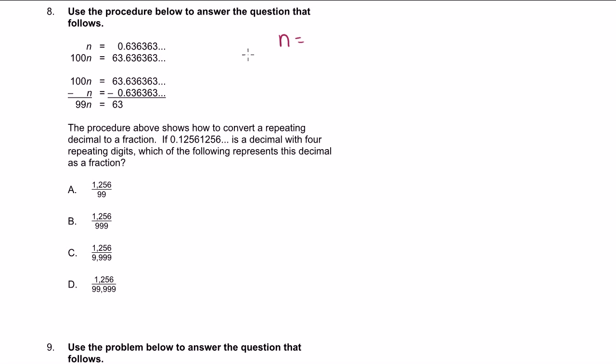You say n is equal to 0.12561256. And then we could multiply that. And you could even pattern match. Here we had two digits repeating. They multiplied it by 100. And 100 has two zeros. Here we have four digits repeating. So we're going to multiply it by something with four zeros.